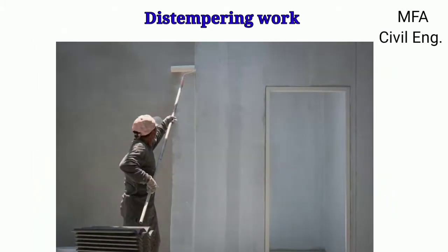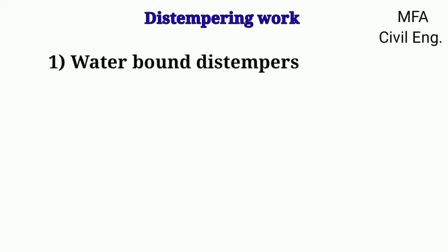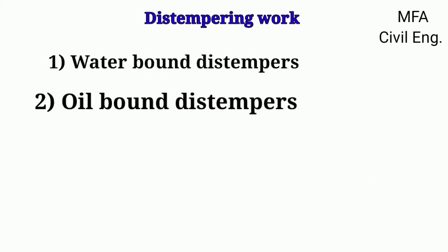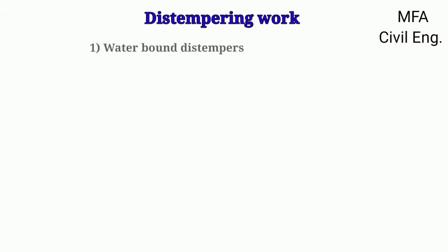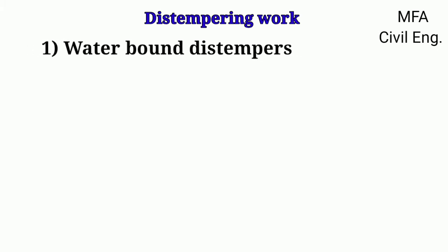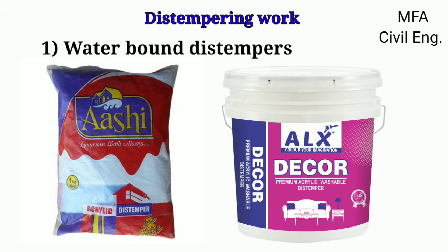Distemper is of two types which are commonly used for distempering work. These are water bond distemper and oil bond distemper. Water bond type of distemper is available in the market in powder form or paste form, and it is mixed in hot water before use.